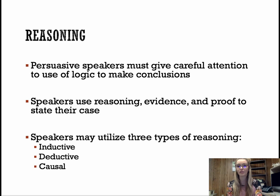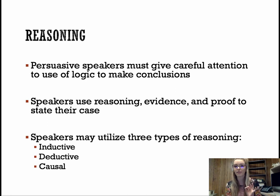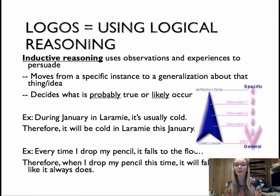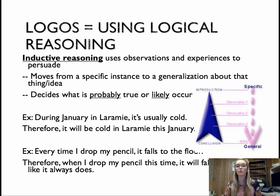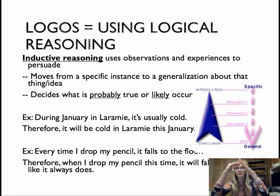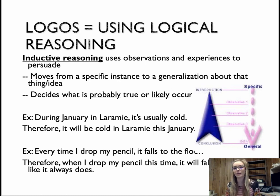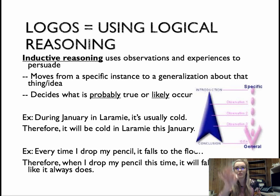Moving into reasoning — this is that logos. Persuasive speakers must give careful attention to the use of logic to make conclusions. Speakers use reasoning, evidence, and proof to state their case. Three types of reasoning: inductive, deductive, and causal. Inductive reasoning uses observations and experiences to persuade — it moves from specific instances to a generalization, deciding what is probably true. I say 'inductive up' — the point is up and you move from several observations down to a general conclusion. For example: 'I went to school in Laramie, Wyoming. During January in Laramie, it's usually cold. Therefore, it will be cold in Laramie this January.' Every time I drop my pencil it falls to the floor — so the third time I pick it up and let go, I'm going to assume it'll drop to the floor. That is inductive reasoning.